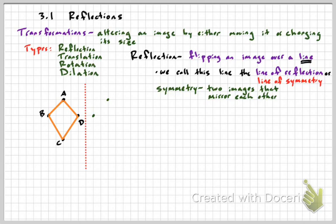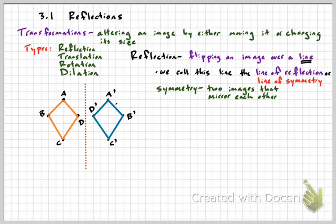Point A is three units to the left of that red dotted line, so the new A prime would be three units to the right. D is one unit left, so the new D would be one unit right. The same concept applies for B and C. Notice that B is five units to the left. We call the new point B prime — that's prime notation, using an apostrophe. So B prime is five units to the right.